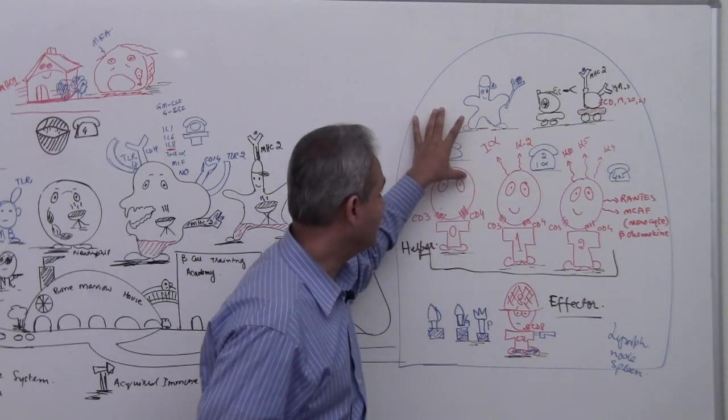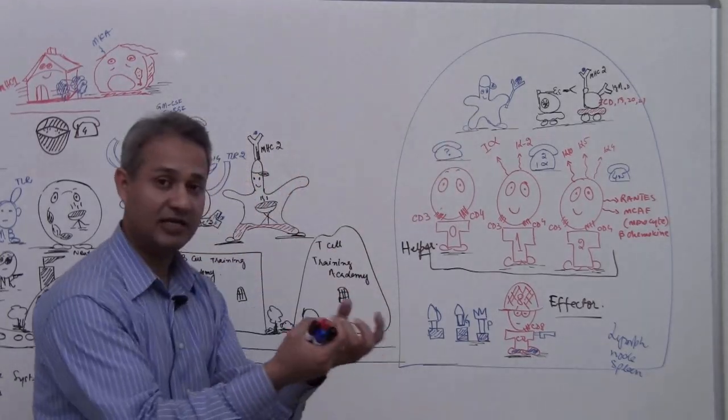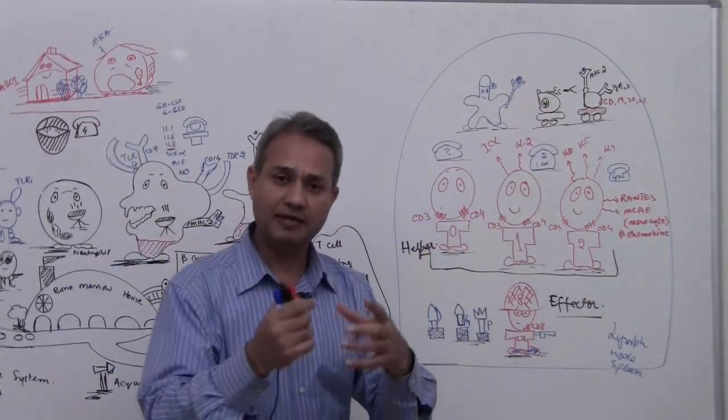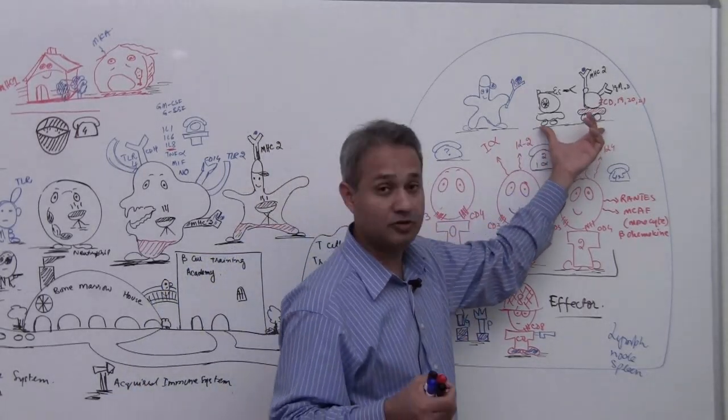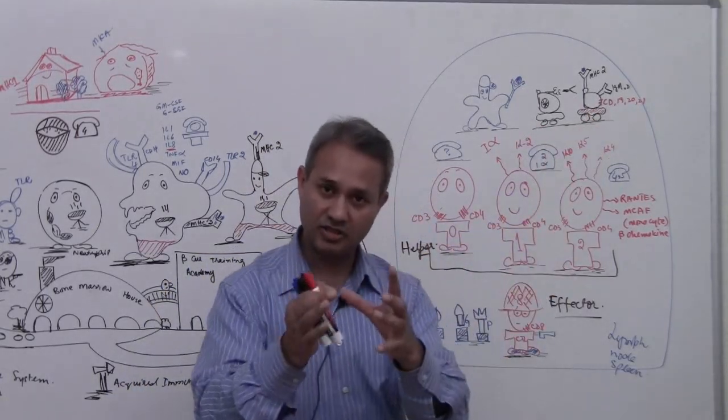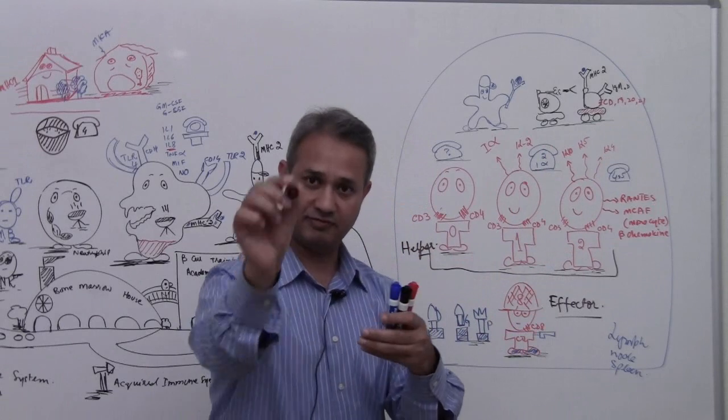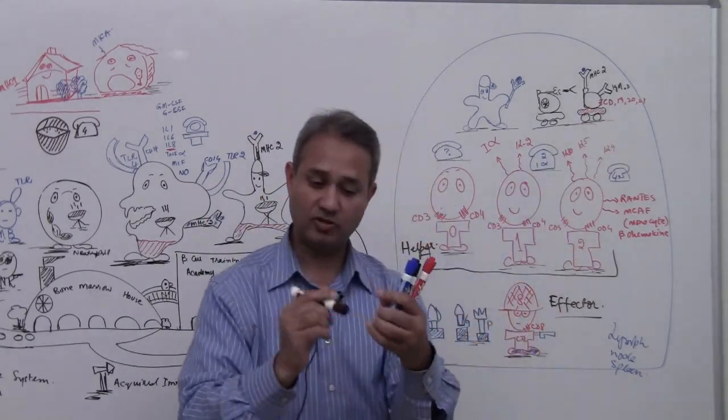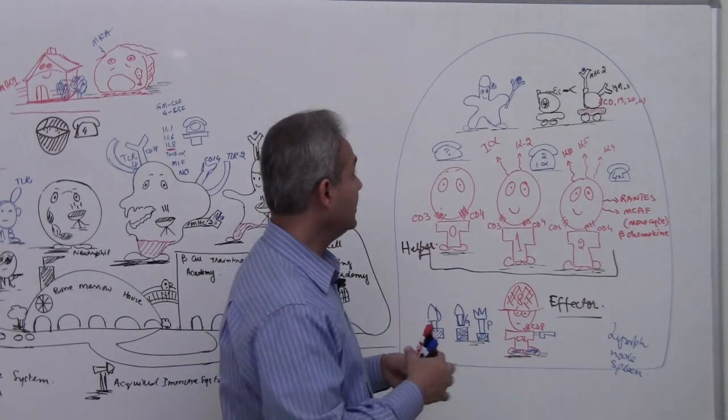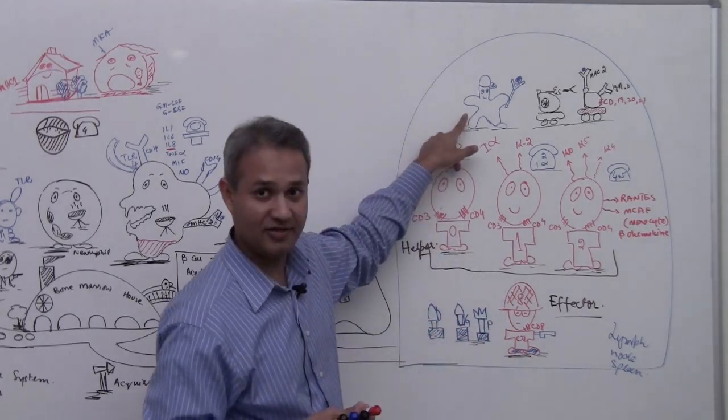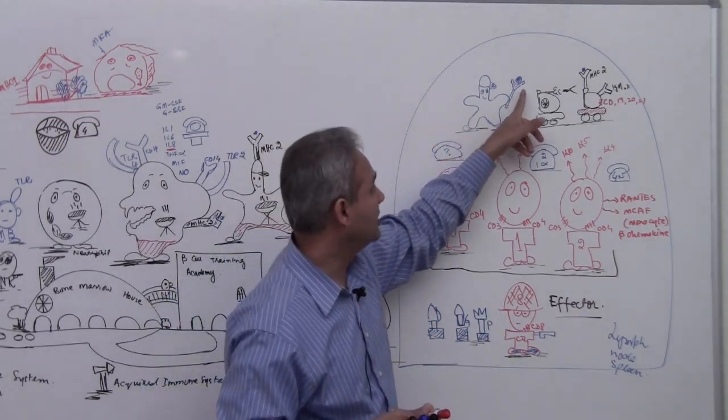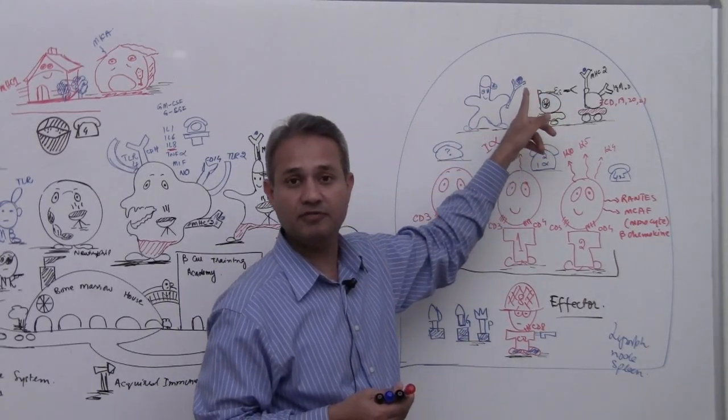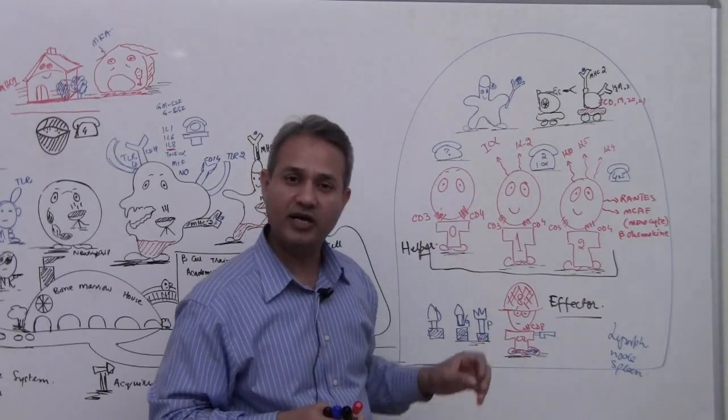He sits in here and grabs the antigen antibody complexes. We will talk about it. Antibody is something which is produced by the B cell, which is the arsenal, the weapon. It throws the weapons at the pathogens. Those weapons then go and grab the pathogen on the tip. This dendritic cell grabs that weapon with the antigen on it, with the virus or piece of bacteria. Why does it do that?